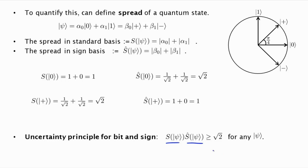At least one of them, so either this must be at least square root of square root of 2, so fourth root of 2, or this must be at least fourth root of 2. So that's the sense in which it's saying that you must be uncertain about either one or the other.